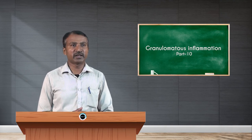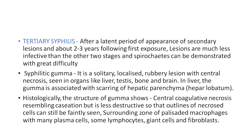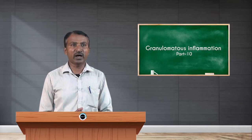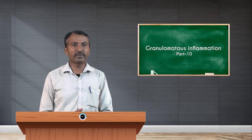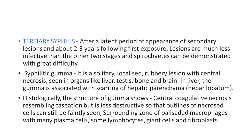In tertiary syphilis, after a latent period following secondary lesions — about two to three years after past exposure — lesions are much less infective than the other two stages and spirochetes can be demonstrated with great difficulty. A condition called the syphilitic gumma is a solitary, localized, rubbery lesion with central necrosis, seen in organs like the liver, testes, bone, and brain. In the liver, the gumma is associated with scarring of hepatic parenchyma, called hepar lobatum. Histologically, the gumma shows central coagulative necrosis resembling caseation but less destructive, so outlines of necrosed cells can still be faintly seen. There is a surrounding zone of palisaded macrophages with many plasma cells, some lymphocytes, giant cells, and fibroblasts.